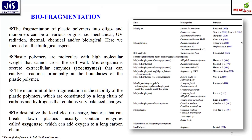Bio-fragmentation involves the fragmentation of plastic polymers into oligomers and monomers and can be of various origins — mechanical, physical, UV radiation, thermal, chemical, and biological. We focus here on the biological aspect. Plastic polymers are high-molecular-weight molecules that cannot cross the cell wall; microorganisms therefore secrete different exo-enzymes that catalyze reactions principally at the boundaries of the polymer. The main limitation of bio-fragmentation is the stability of plastic polymers, constituted by long chains of carbon and hydrogen with very balanced charges. Bacteria that break down plastics usually contain the enzyme oxygenase, which can add oxygen to the long carbon chain.